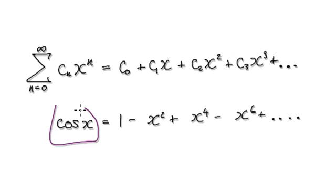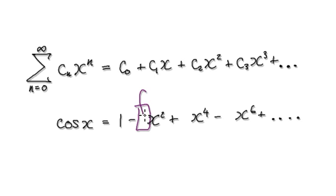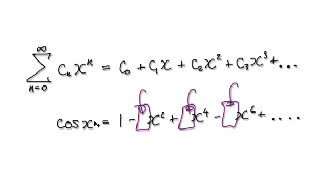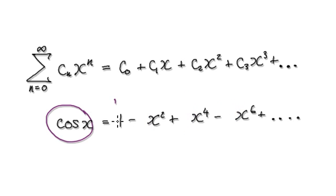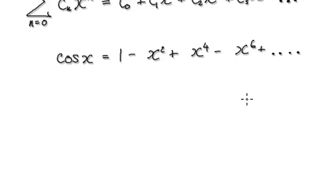For example, cos can be rewritten as a constant minus x squared, plus x to the power 4, minus x to the power 6, and so on. The point is that you can rewrite cos as something involving x squared, x to the power 4, x to the power 6, and so on.